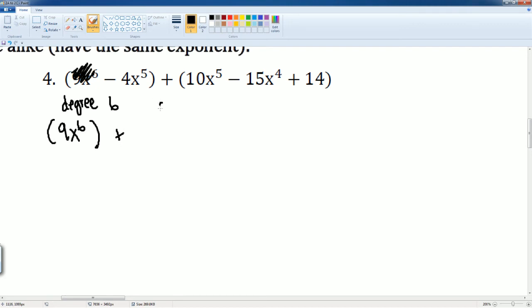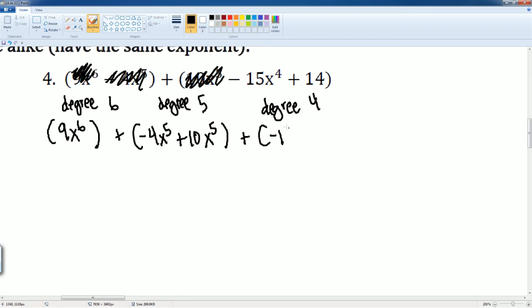Next I'm going to have the degree 5 box. So that is the negative 4x to the 5th power which is here. And then you have the plus 10x to the 5th power here. Okay then I have my degree 4 which is negative 15x to the 4th power. Nothing else goes into that. And then we have our degree 0 which is just our constant term which is just going to be 14.